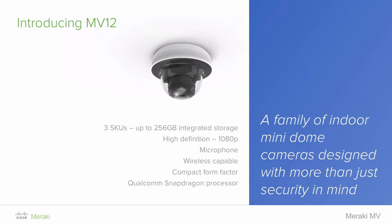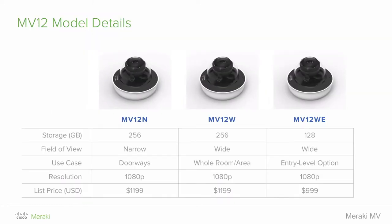We're effectively putting mobile-grade silicon on board each and every camera. What that allows us to do is advanced on-board analytics and machine learning on the camera itself — it's almost like having a smartphone packed into every camera you deploy. The three SKUs include wide and narrow field of view options, since these are fixed-lens cameras. While you won't be able to do optical zoom, we do have a sensor crop tool that allows you to do a digital zoom without any loss of quality.